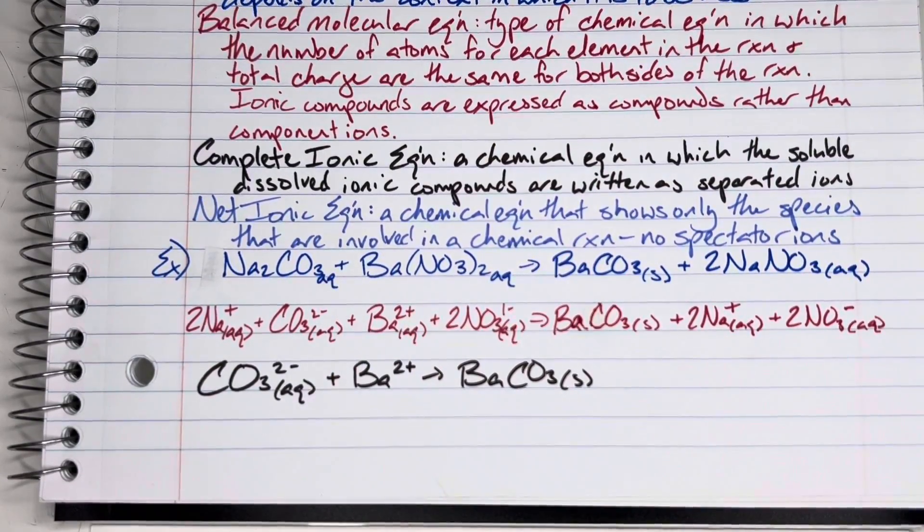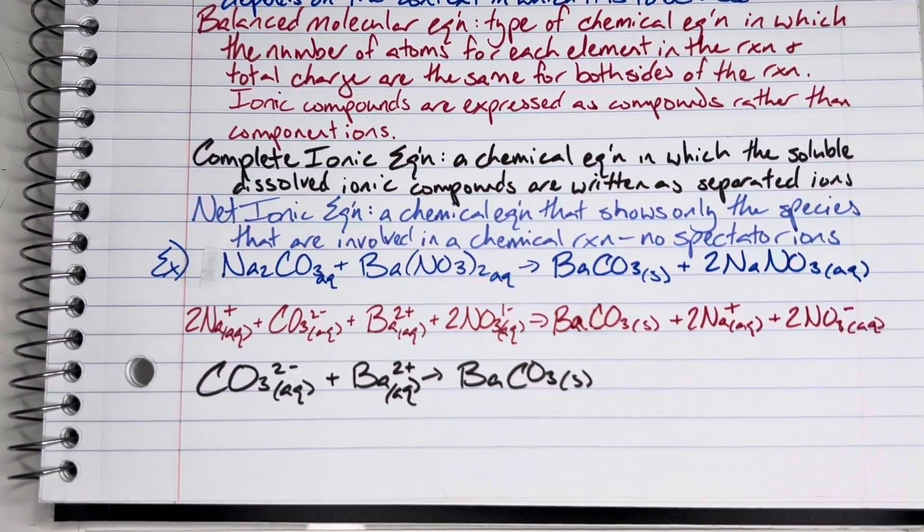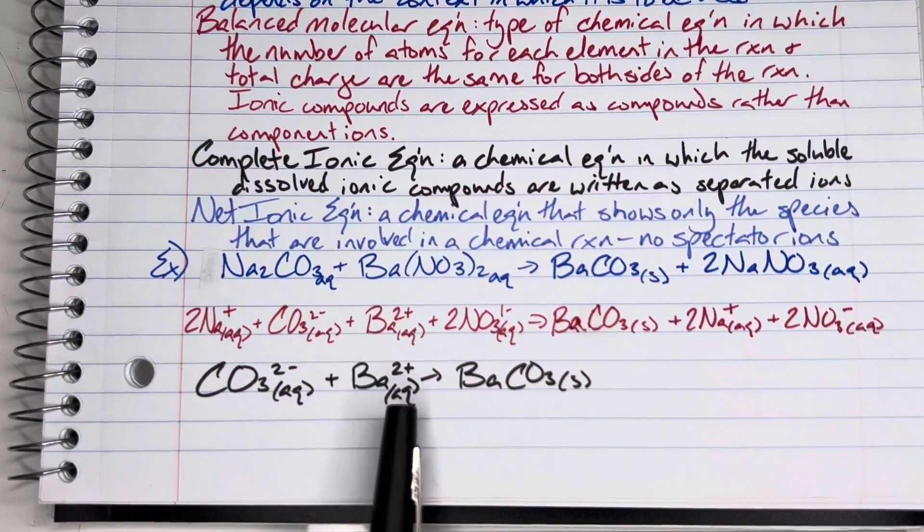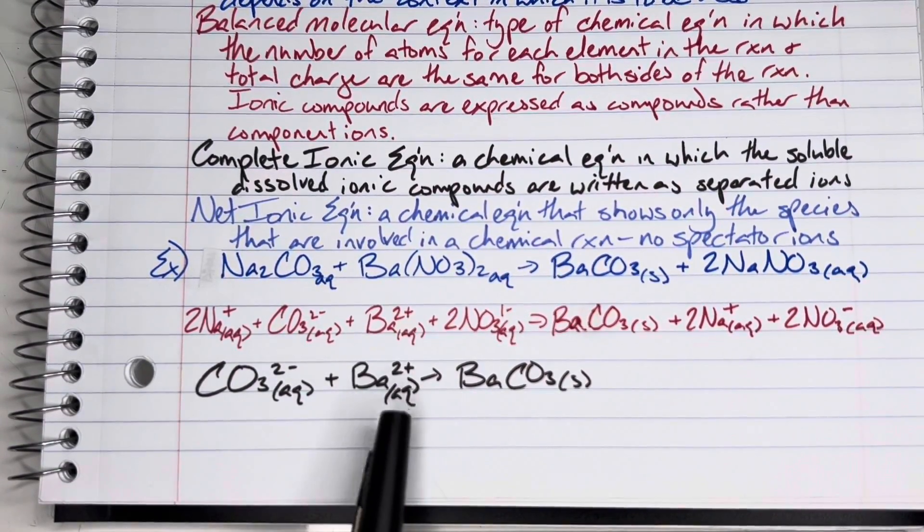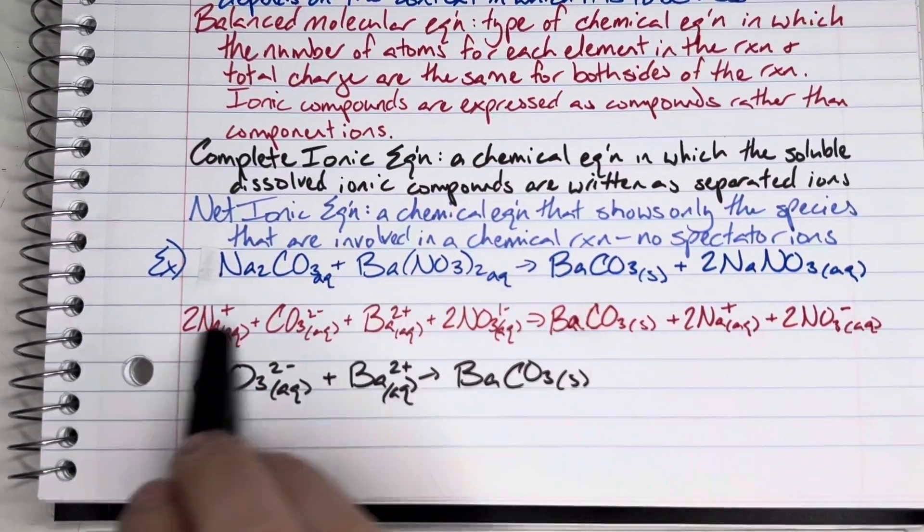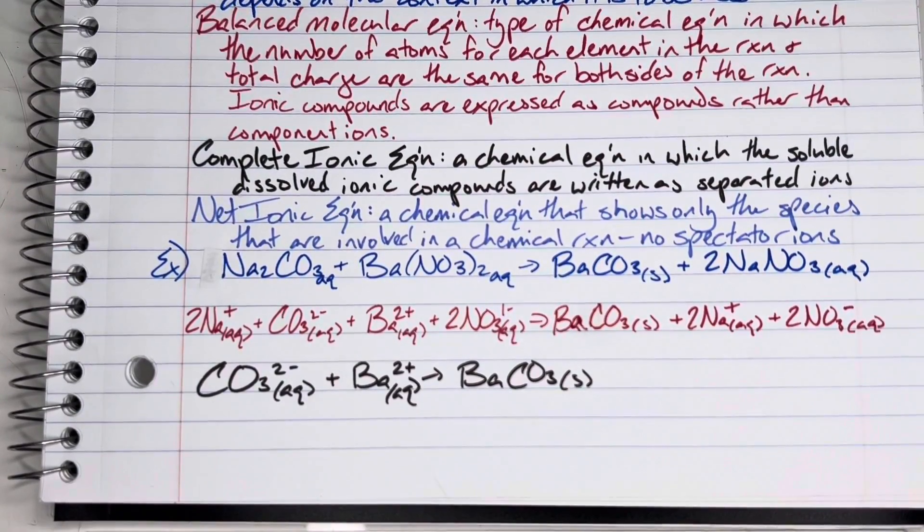I did just realize that I accidentally forgot to include the state signifier for barium, so I just went ahead and added that. That should be there in the final net ionic equation. I've added that, but this would be my final answer here. It is balanced, and I have eliminated any spectator ions.